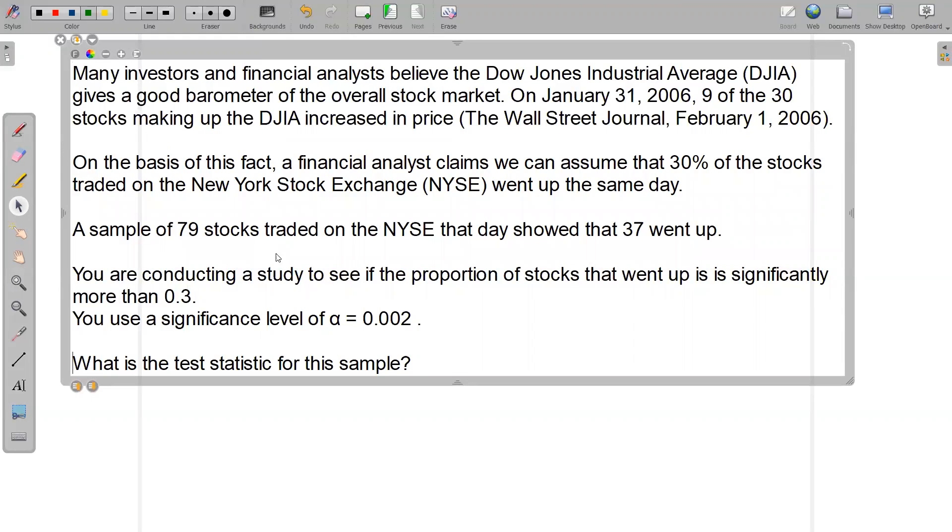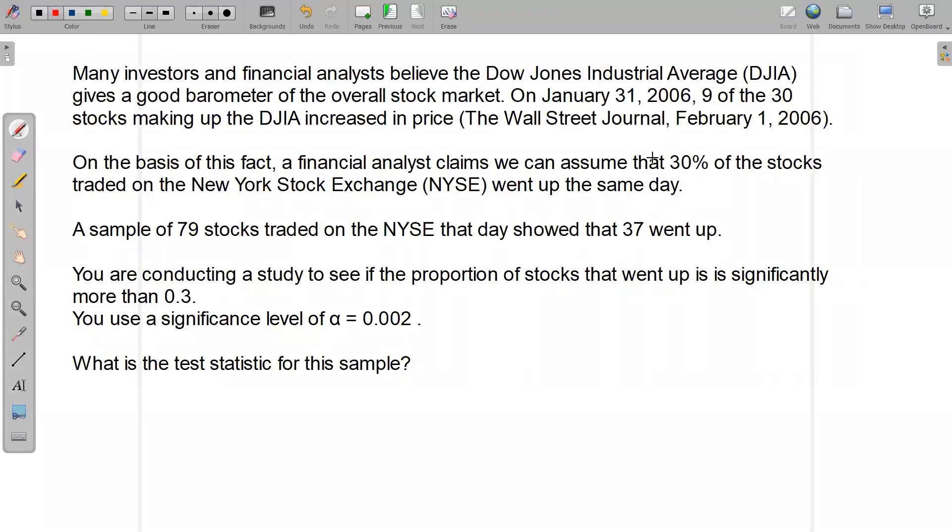On the basis of this fact, the financial analyst claims that we can assume 30% of the stocks traded on the New York Stock Exchange went up the same day. So all over the place I'm getting proportion, proportion, proportion. This sentence right here says P equals 0.3. That right there has to be the null hypothesis because it has an equal to in it.